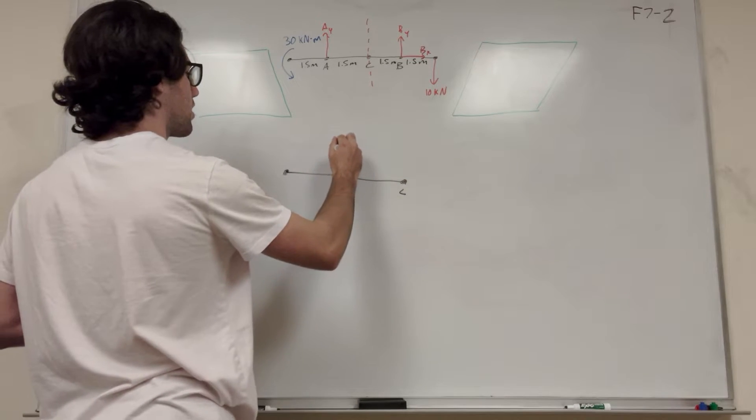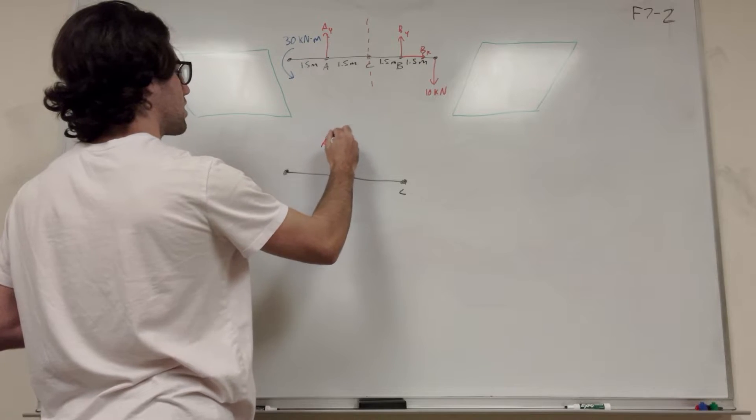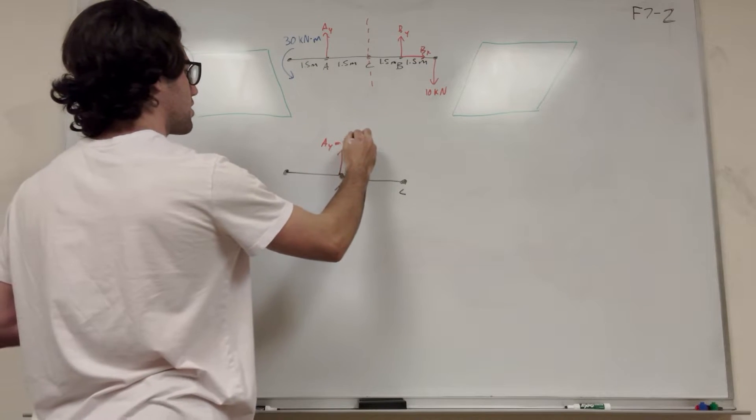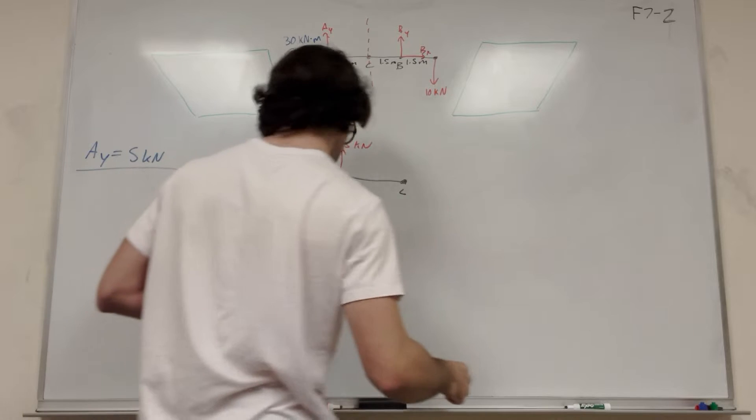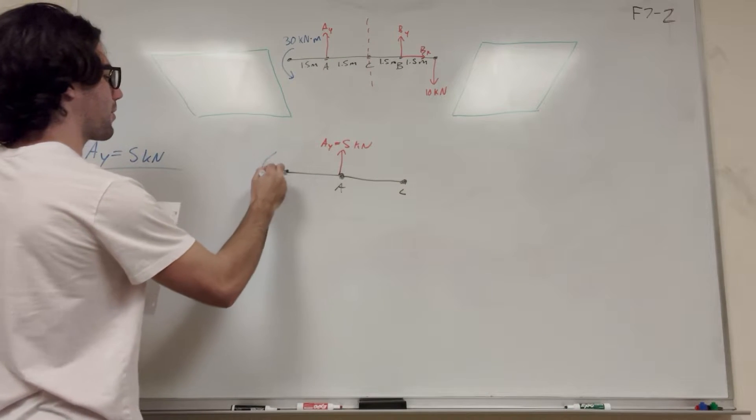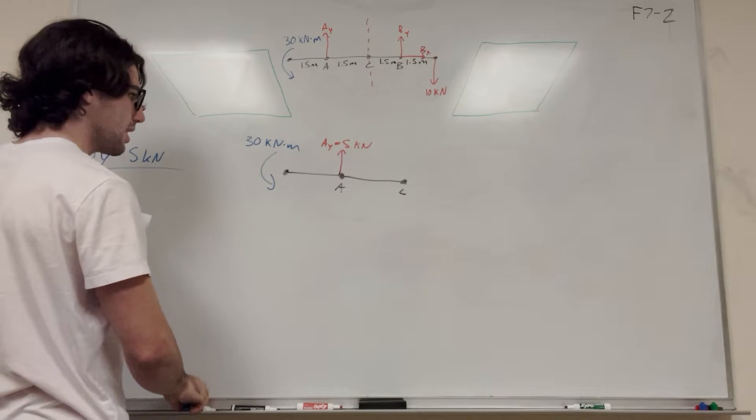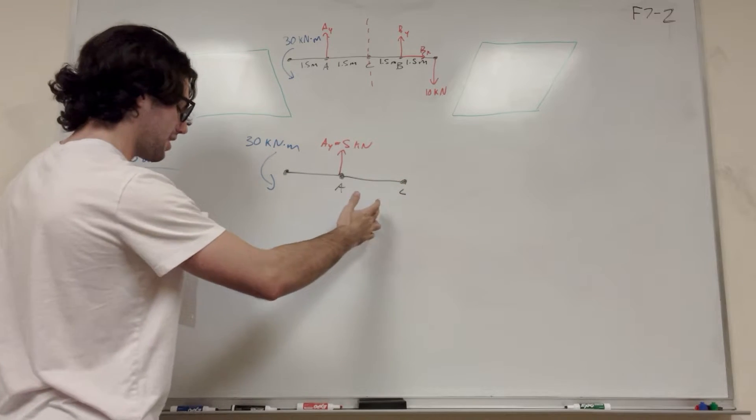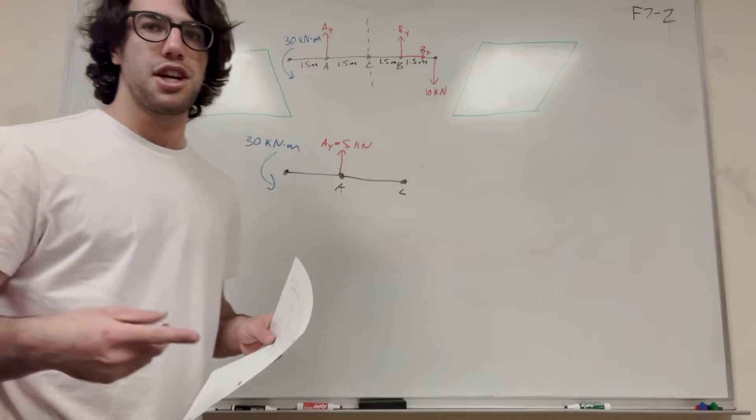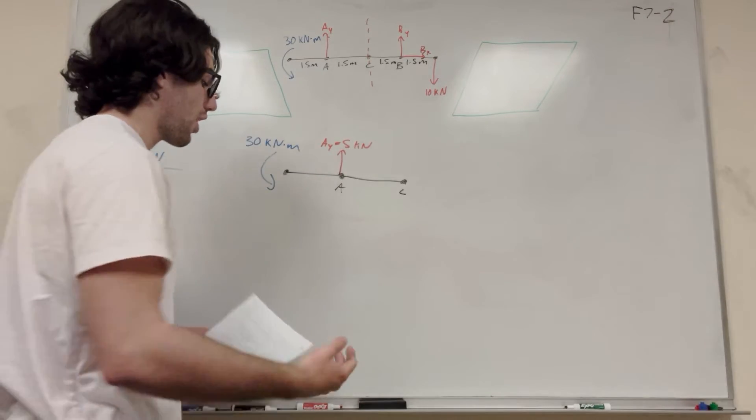So we know that we have A_Y is equal to 5 kilonewtons. So we know that we have this 30 kilonewton per meter moment. And then we have C here. So what happens at C? Well, if we're trying to find the shear, the moment, and the normal at C, let's draw those in.